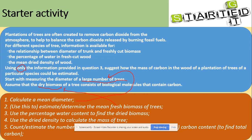Use the percentage of water content to find the dry biomass. What we've learned before is that dry biomass is the fresh biomass without the water. Then use the density to calculate the mass of the tree, estimate the number of trees used, and look at the carbon content to find the total amount of carbon.